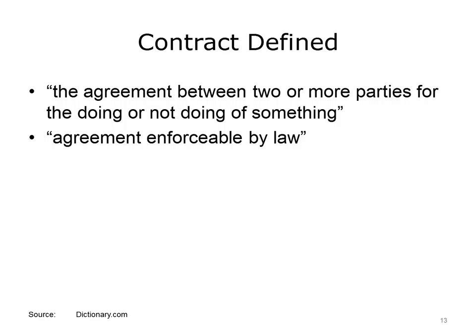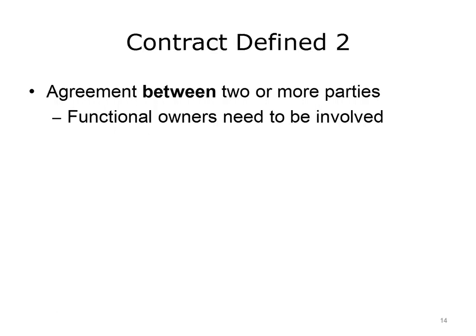Dictionary.com defines a contract as the agreement between two or more parties for the doing or not doing of something, and as an agreement enforceable by law. Legal documents should not be entered into lightly or without fully comprehending the implications of the terms and conditions, since these will govern a business relationship over a defined period of time. A contract should be an agreement between parties, not the acceptance of one party's views at the expense of the other. The functional owners of a product must be involved in the negotiation process before a contract is signed — they cannot just pass off negotiations to the IT department.